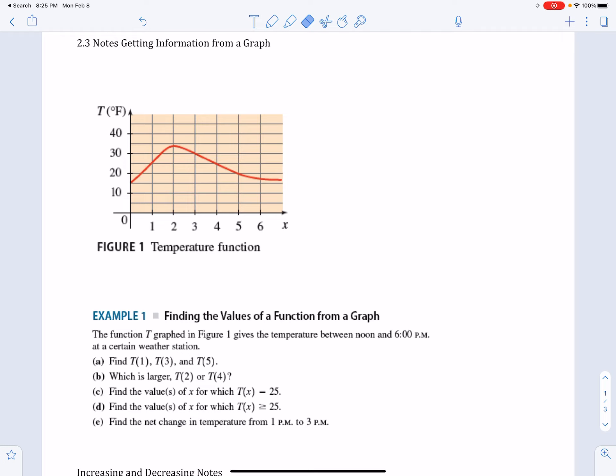We're going to start with Example 1: finding the values of a function from a graph. The function T graphed in Figure 1 gives the temperature between noon and 6 p.m. So the temperature is the y-value over here, but the x-value down here is time between noon and 6 o'clock. This is going to be our 6 o'clock, everything below that - 5 o'clock, 4 o'clock, etc.